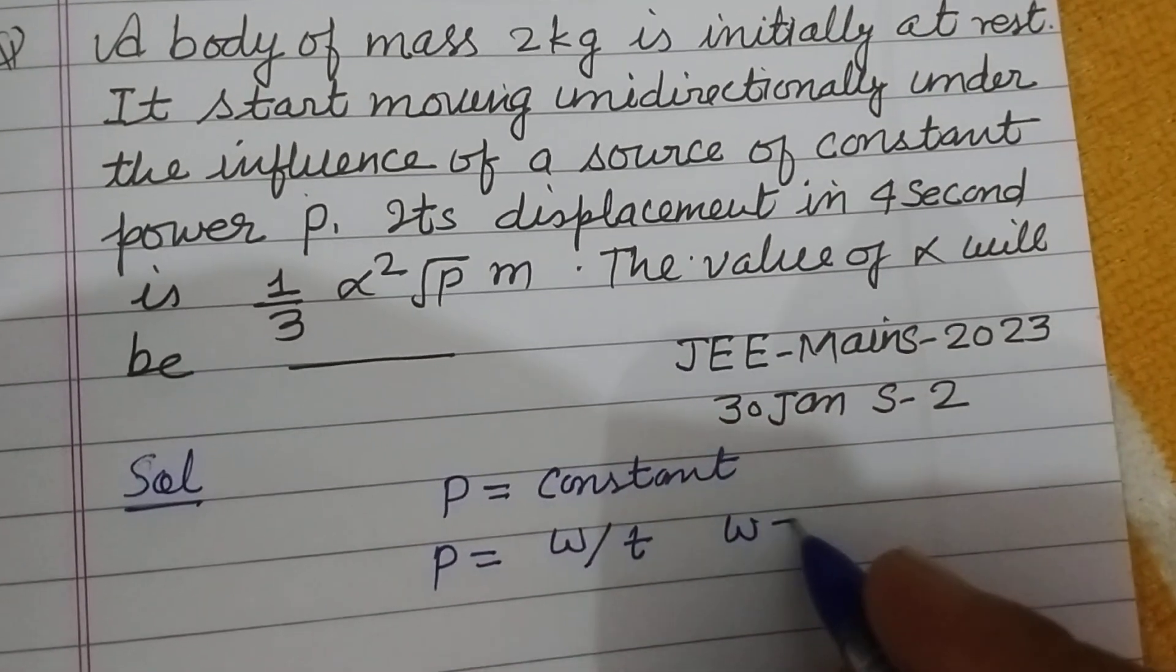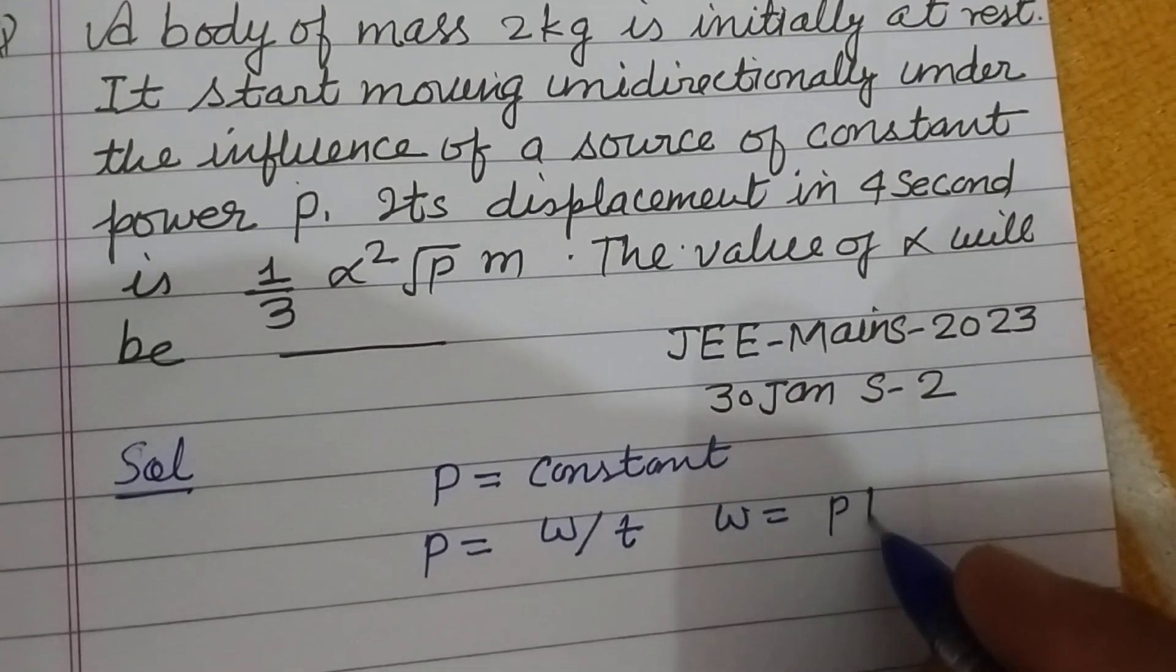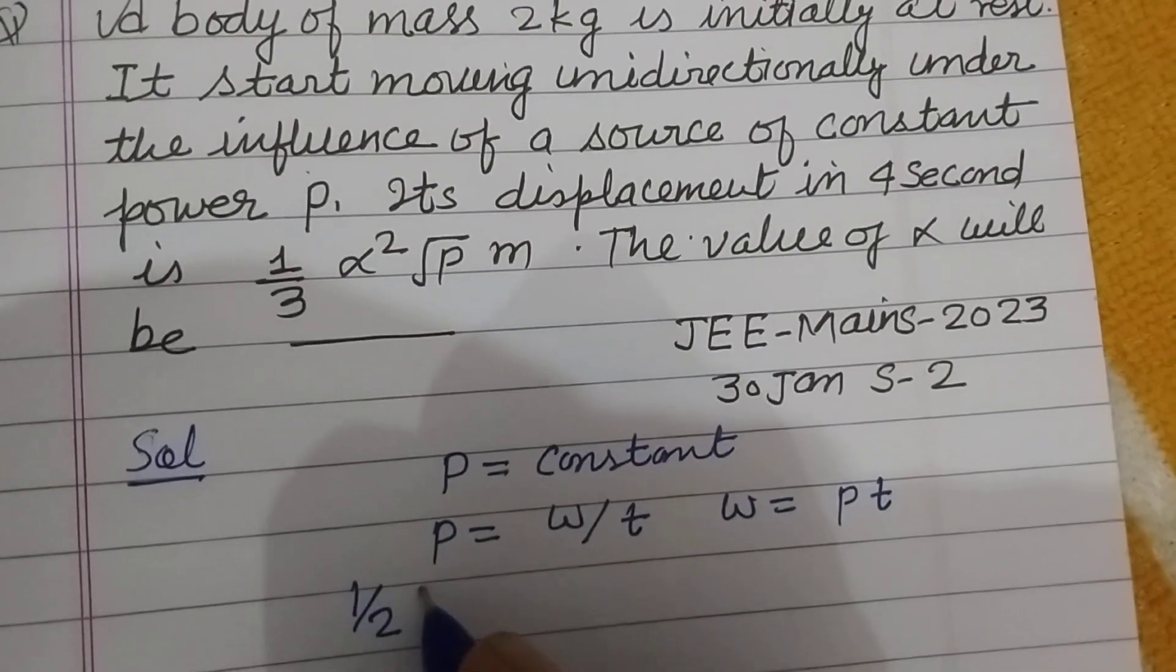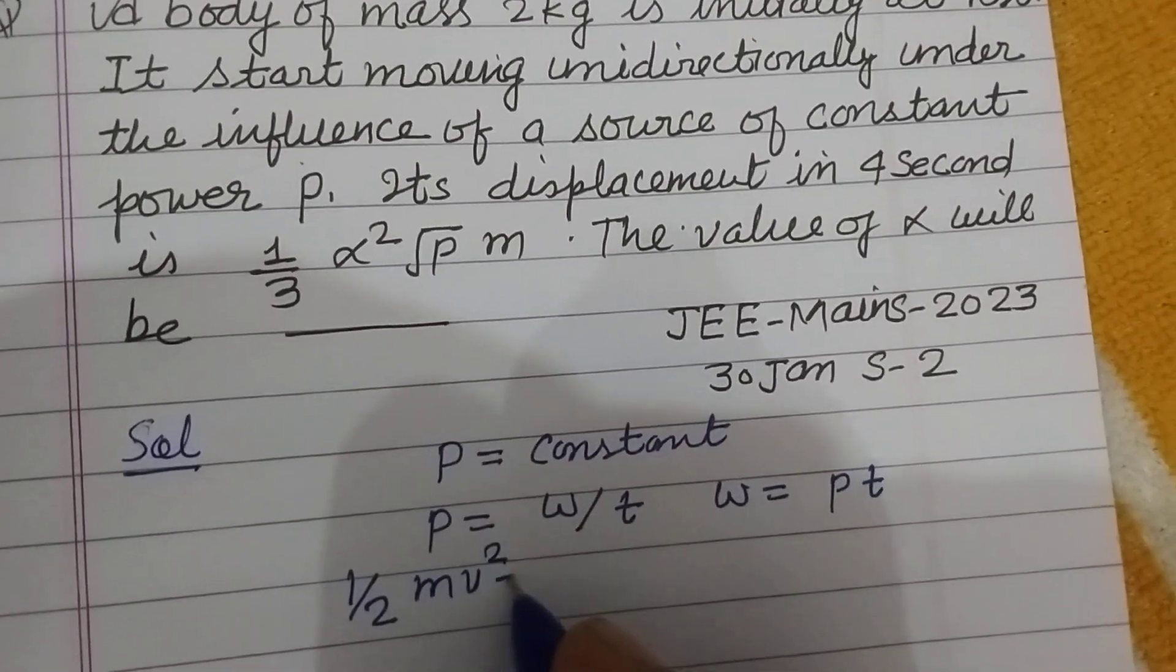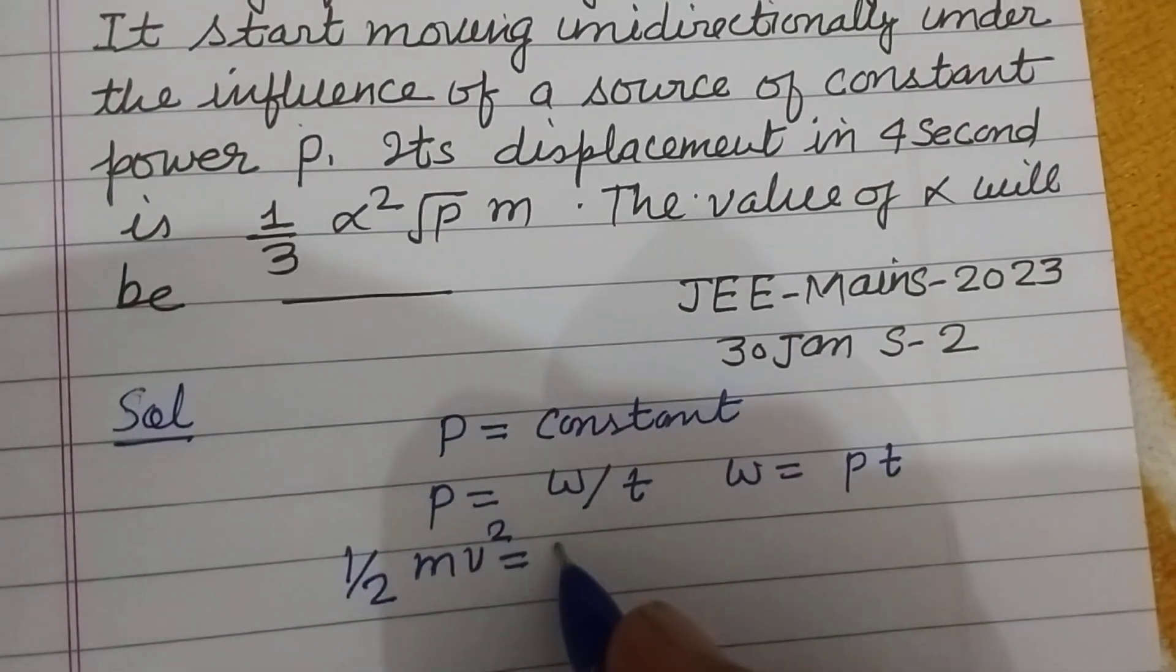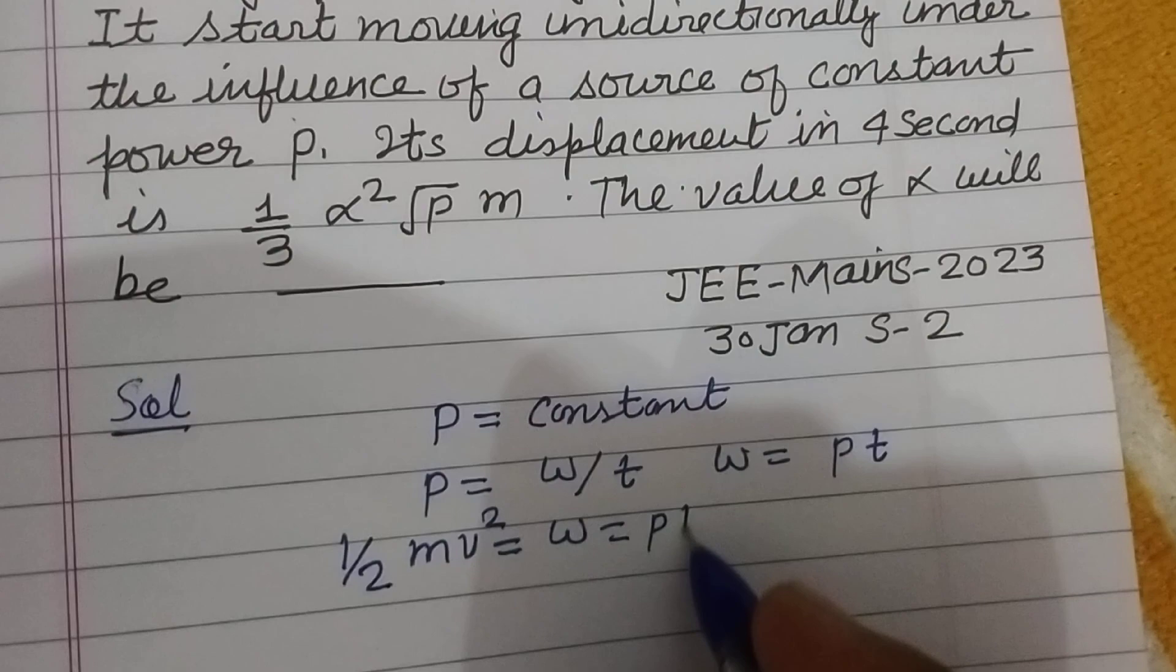So W equals P times T. And you know that work is equal to the kinetic energy. So half Mv squared equals W equals PT.